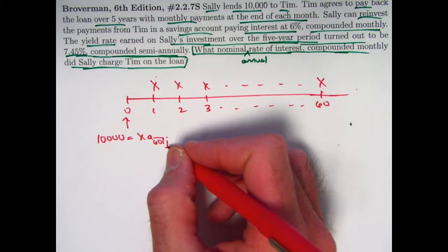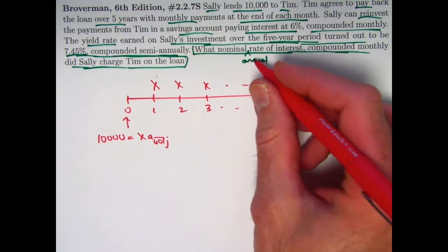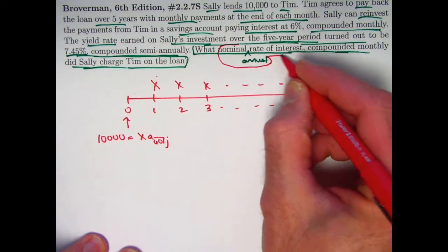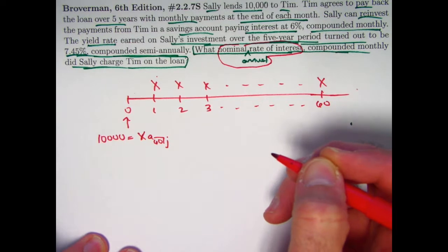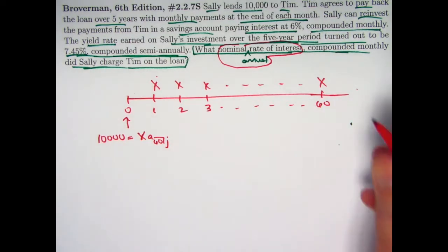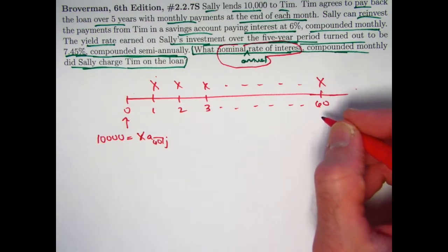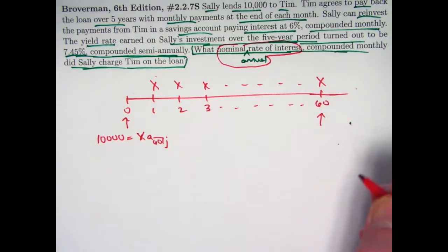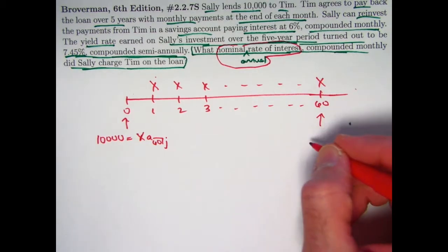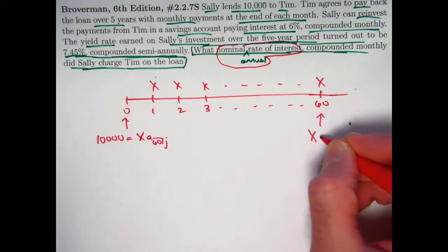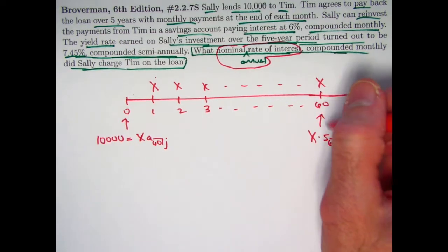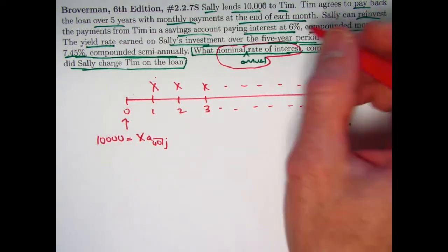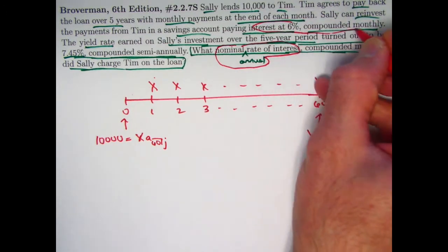Note that j is not the final answer — 12 times j would be the final answer, the nominal annual rate of interest. The symbol a represents the present value of an annuity immediate. The future value of this annuity immediately after the last payment at time 60 can be described as X times s-angle-60. However, this grows based on Sally's reinvestment into the savings account paying 6% compounded monthly.